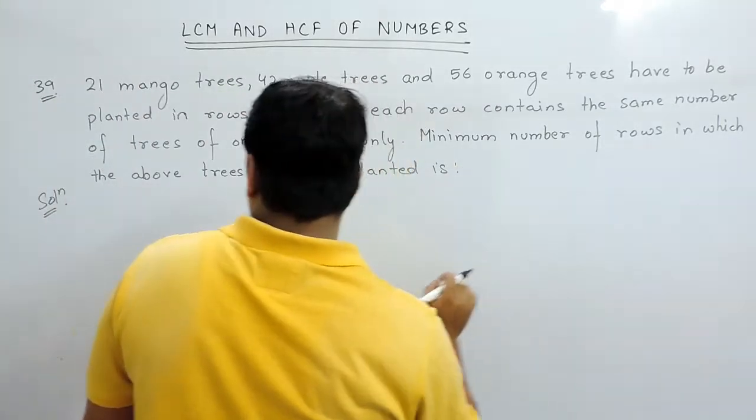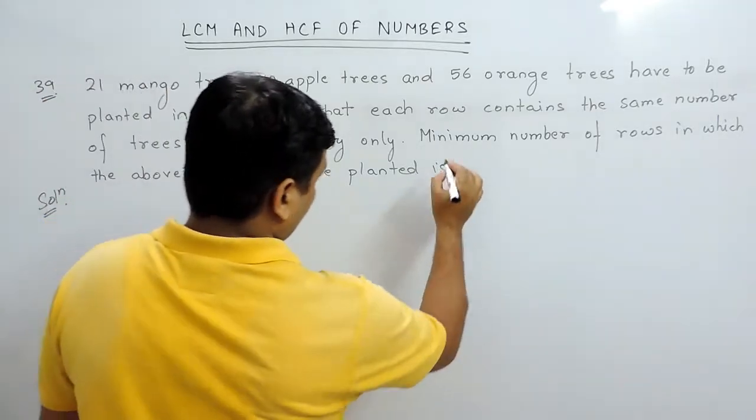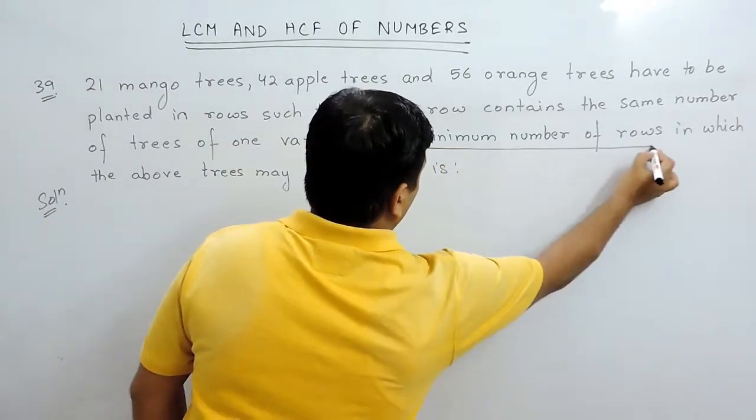Minimum number of rows in which the above trees may be planted is. So we have to find the minimum number of rows.